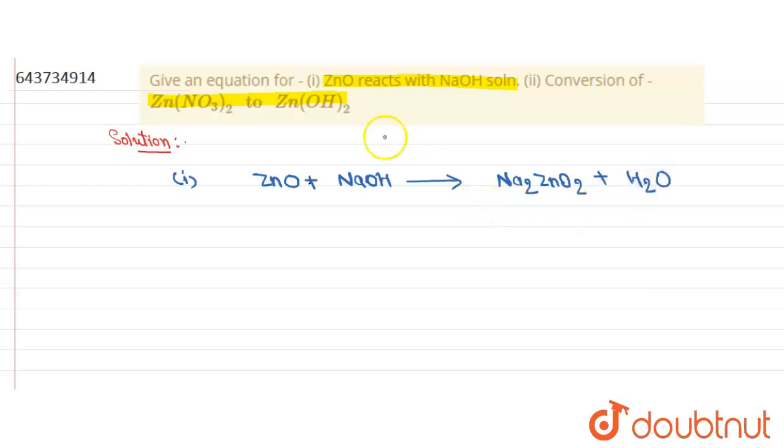Balancing this equation, multiply by 2, and this will be the balanced equation. It is sodium zincate.